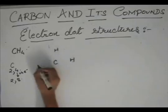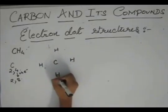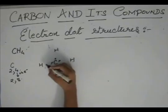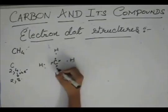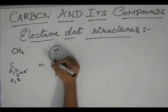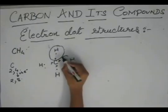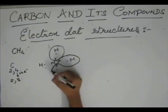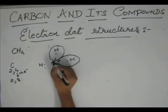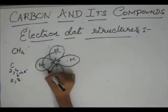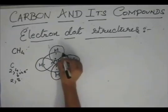So there are 4 hydrogens. This has 4 electrons, this has 1 electron each. So it will share this, this will share this, this will share this and this will share this. And carbon will get all these 4 electrons.